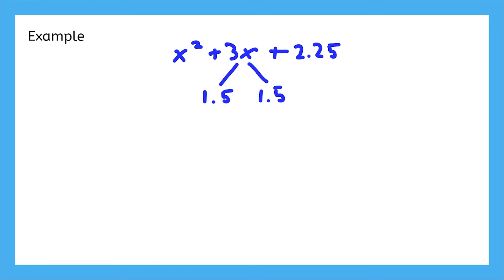Even though it involved decimals, we're still able to complete the square. We could factor it into x plus 1.5 squared, since 1.5 times 1.5 is what makes the 2.25.